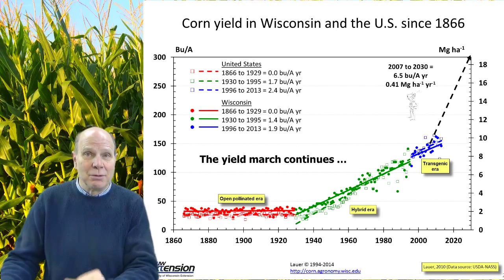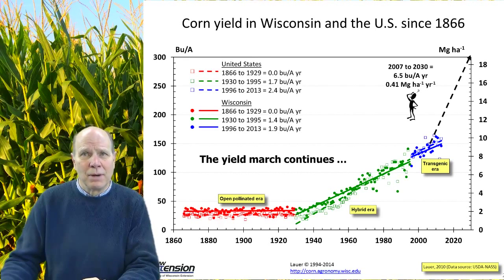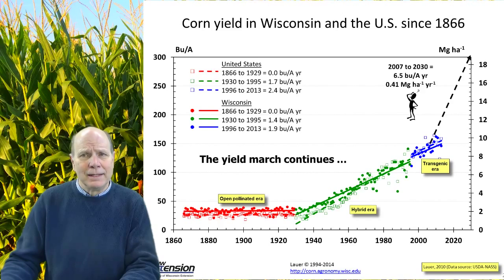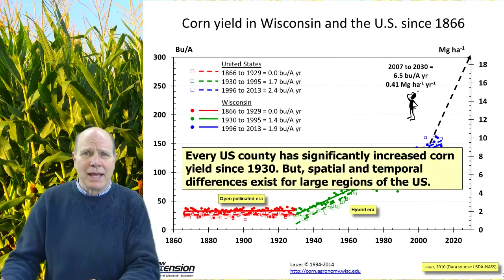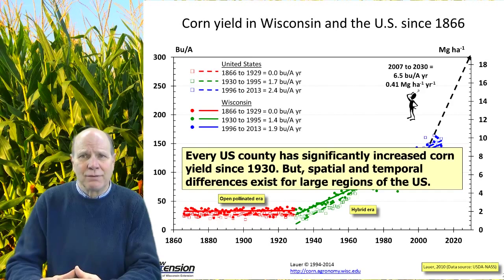Some of the projections that have been made are that by the year 2030, we will be producing corn at about 300 bushels per acre on average. That would mean we'd have to increase corn production about 6.5 bushels per acre per year. This projection was made in 2007 and we haven't really kept on that trend line, but it's quite a goal. Every U.S. county has significantly increased corn yields since 1930.